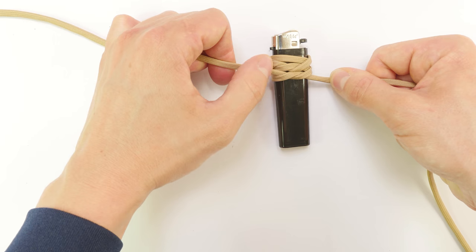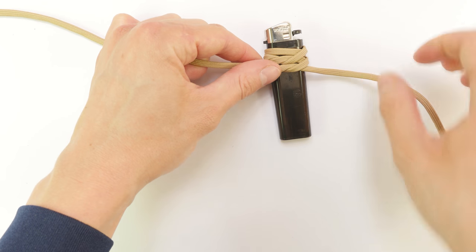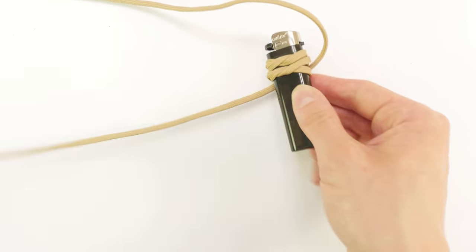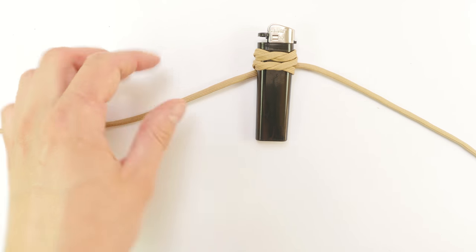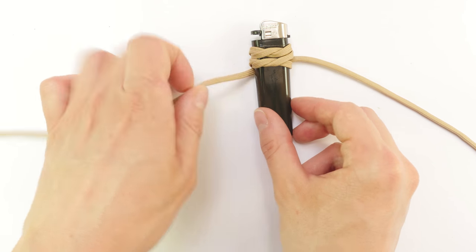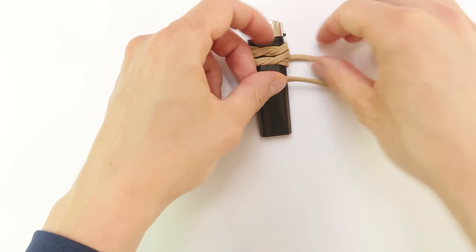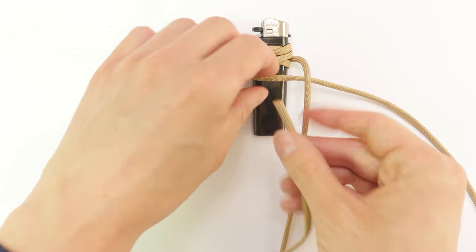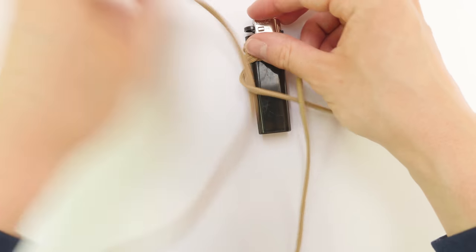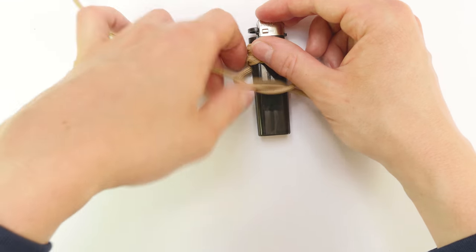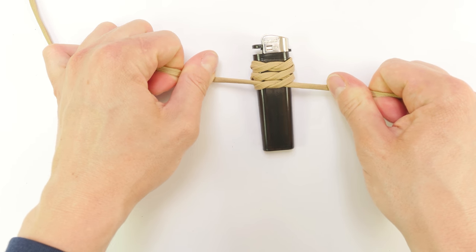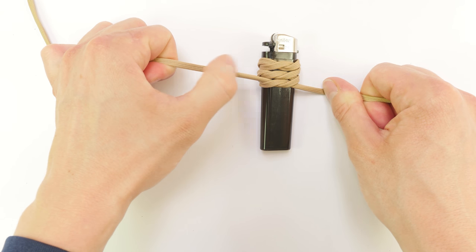And you can probably already see the pattern. All we're doing is turning around our lighter, then tying a half knot. Continue until you fill out your lighter.